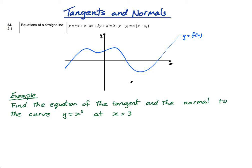What is a tangent? Well, a tangent is a straight line that touches the curve at a particular point — it just touches the curve once. It doesn't cross it, it just touches it just once. That is the tangent. So that is the tangent to the curve y equals f of x at this point.